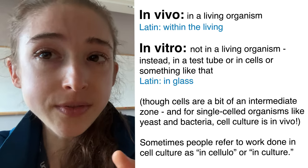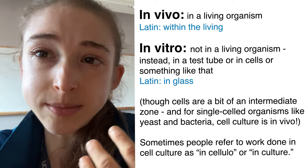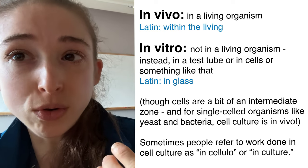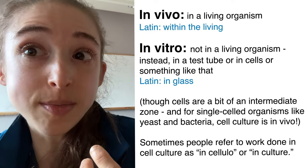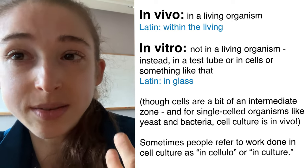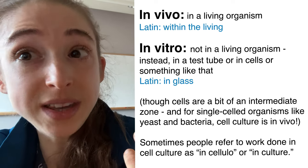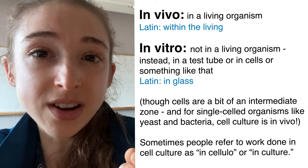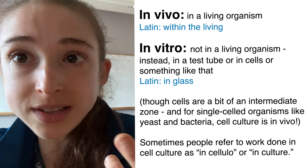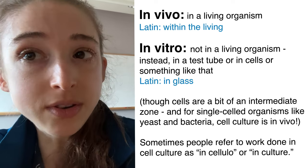So let's start with in vivo, which is in an organism, versus in vitro, which is in some sort of artificial setting, such as a test tube or cell culture. If you're talking about something like bacteria or yeast that grows as normal, that would be in vivo. But when we're talking about cell culture — dealing with cells that you take out of a person and grow in a dish — this would be an example of in vitro.